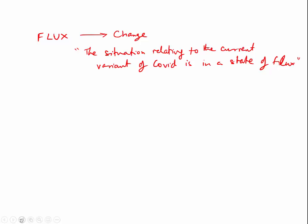For example, a news reporter might say the situation relating to the current variant of COVID is in a state of flux — meaning we're not sure what's going on, things are changing pretty rapidly. Well, in physics — and in fact even in the dictionary — flux is not change. You want to think of flux as a flow.